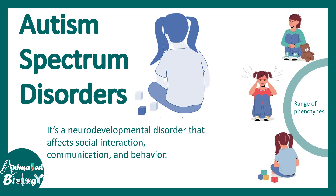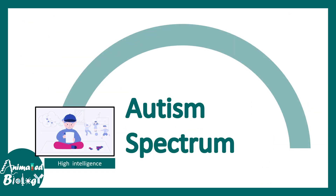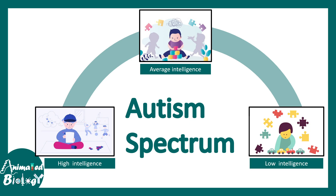Autism results in a range of phenotypes, and that is why it is known as a spectrum. On one side of the autism spectrum there is high-intelligence autism, where children have very high interest in one particular topic and are highly skilled at it. In the middle spectrum there is average intelligence, where people struggle to thrive and do problem solving. Another spectrum is low intelligence, where individuals find it difficult to perform day-to-day tasks, interact with people, or make new friends.